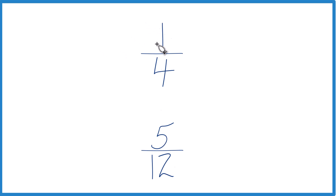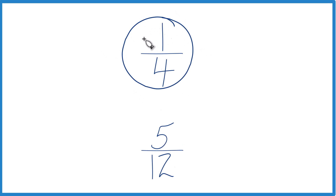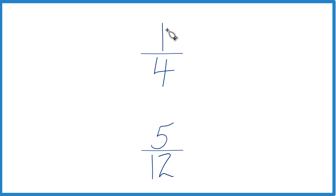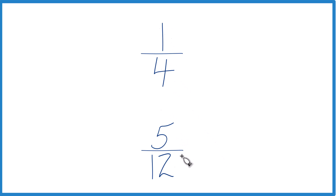Let's take a look at which fraction is greater: 1/4 or 5/12. You could just divide 1 by 4 in a calculator, get a decimal, and then 5 by 12, get a decimal, and just compare the decimals. That would tell you which is larger, 1/4 or 5/12.